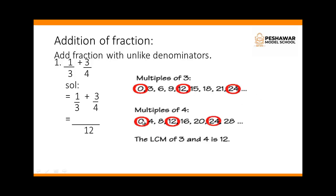And the multiples of 4: 0, 4, 8, 12, 16, 20, 24, 28. So here are 3 common multiples: 0, 12, 24. But the least common multiple of 3 and 4 is 12.